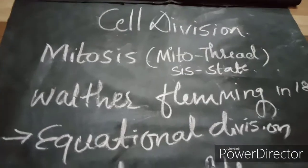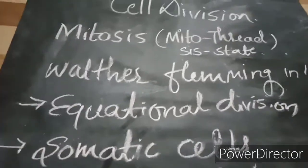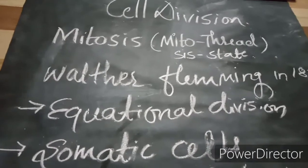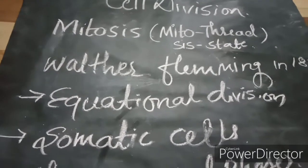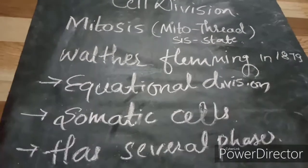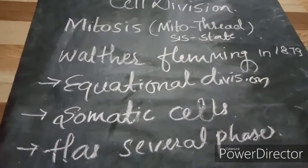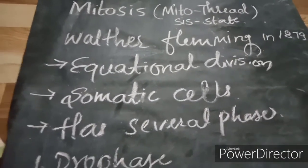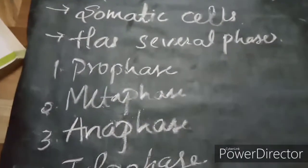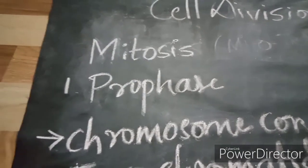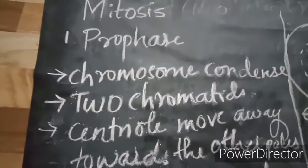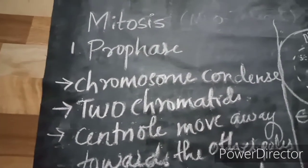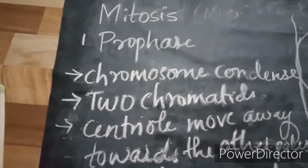Mitosis takes place in the somatic cells, that is the body cells. It also takes place in the germinal cells during the multiplicative phase. Mitosis has several phases: prophase, metaphase, anaphase, and telophase. Coming to prophase, it is the first stage of mitosis. Here the chromosomes become short and thick due to condensation — hence the chromosomes condense.